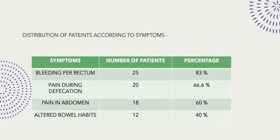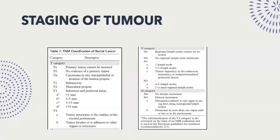Distribution of patients according to symptoms: the majority of patients presented with bleeding per rectum and painful defecation. Pain in abdomen and altered bowel habits were seen in a lesser percentage of patients. Coming to the staging of tumor, TNM classification of rectal cancer is used in the reporting pattern. MRI is less useful in differentiating T1 and T2 lesions. Subclassification of the T3 category is determined on the basis of MRI evaluation and is used in European guidelines for treatment recommendations. N category is decided based on the number of nodes involved in the mesorectal fascia and the number of distant nodes involved. M category is determined based on PET-CT or CECT.